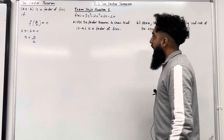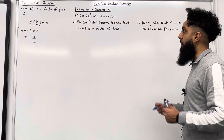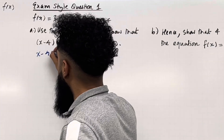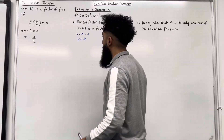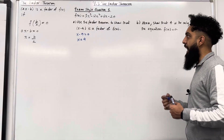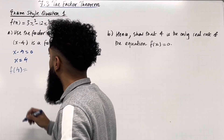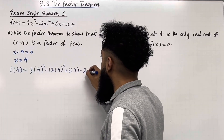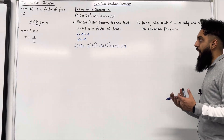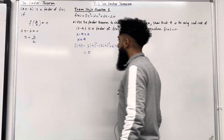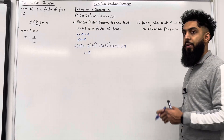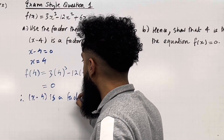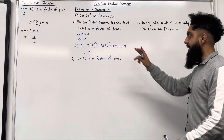Let's look at Part A. We must use the Factor Theorem to get the marks. First, set x − 4 = 0, which gives x = 4. Now substitute x = 4 into f(x): f(4) = 3(4³) − 12(4²) + 6(4) − 24. Putting this into the calculator gives 0. Since the remainder is 0, we conclude: therefore x − 4 is a factor of f(x). That completes Part A.